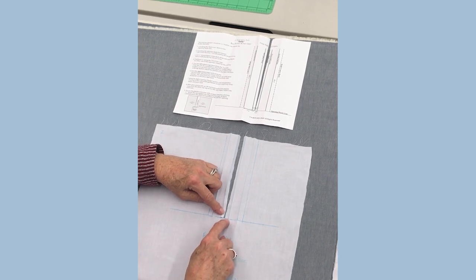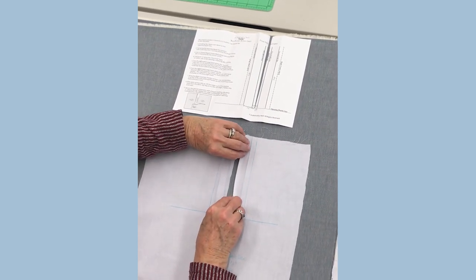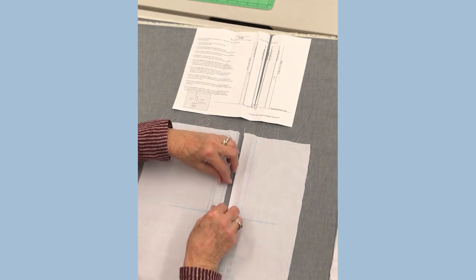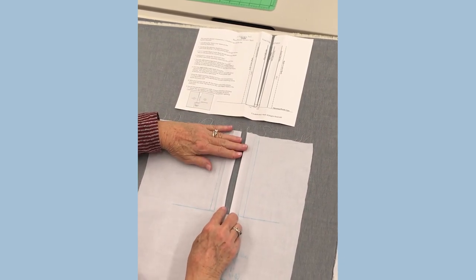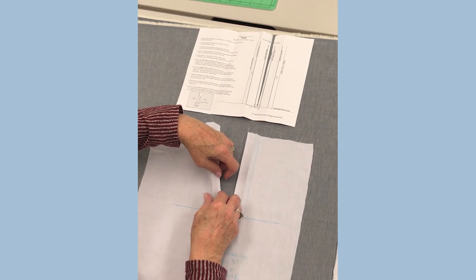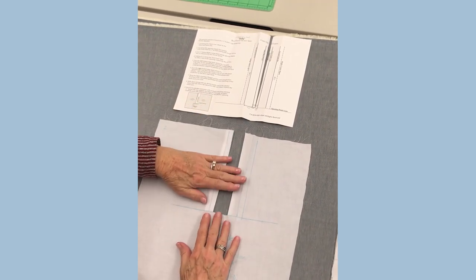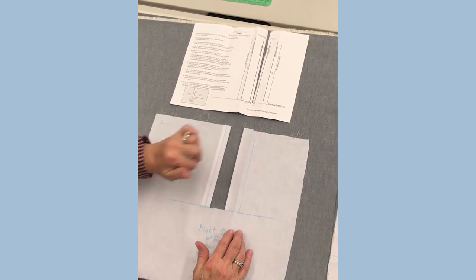Next step is to turn the right side under right to where you clipped. On the left side you turn under the quarter inch and press it, then turn under the three quarter inch. Now you have a big rectangle that's cut out right here.